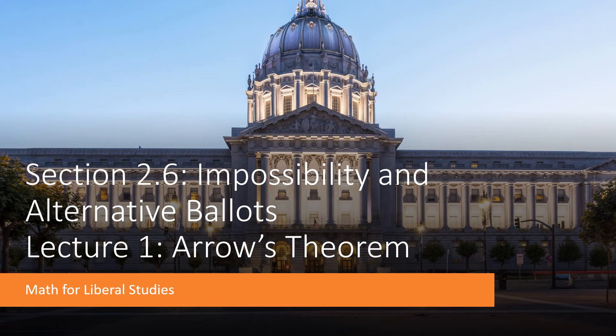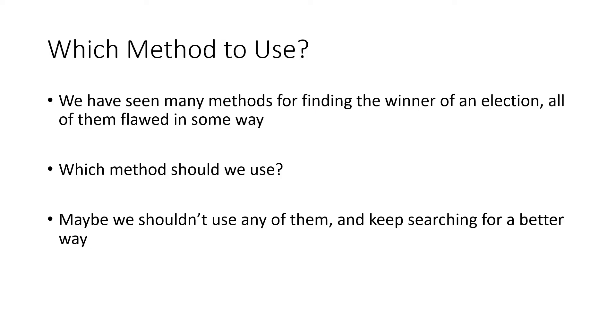This is the first lecture video for section 2.6 on impossibility and alternative ballots. In this lecture we'll be talking about something called Arrow's Theorem. For the last several lectures we've been talking about different methods for finding the winner of an election, and what we found is that so far all of them seem flawed in some way.